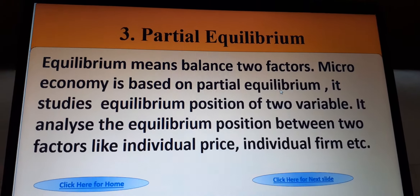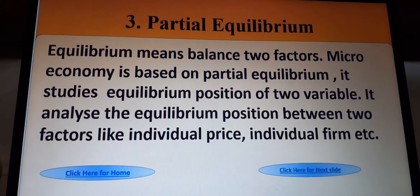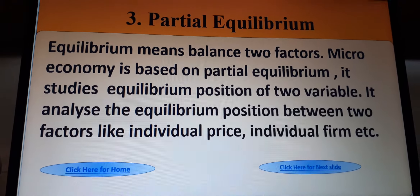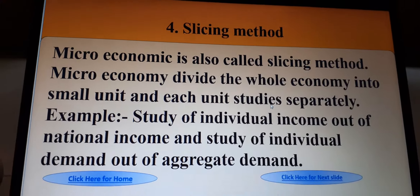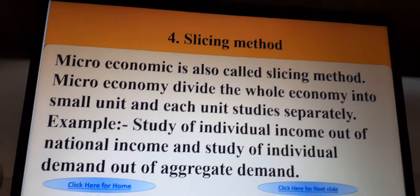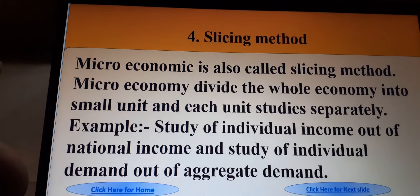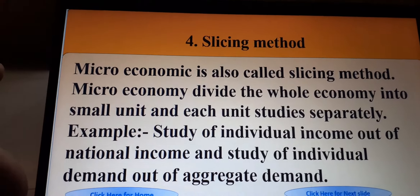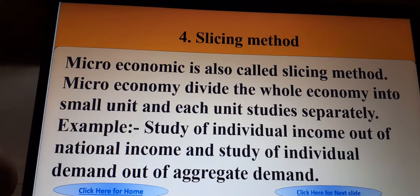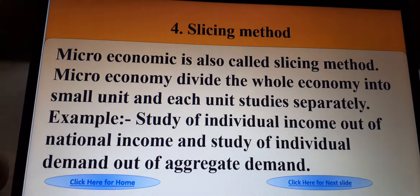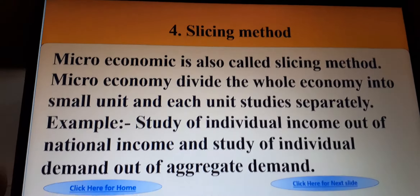Microeconomics is based on partial equilibrium and uses the slicing method. It divides the whole economy into small units and studies each unit separately. For example, study of individual income out of national income, and study of individual demand out of aggregate demand.